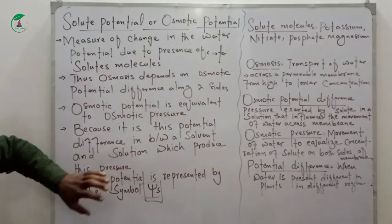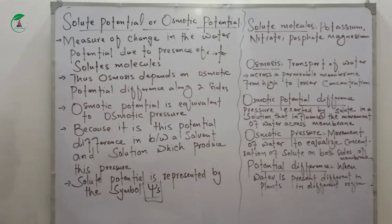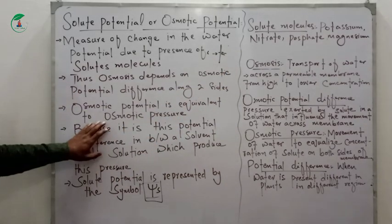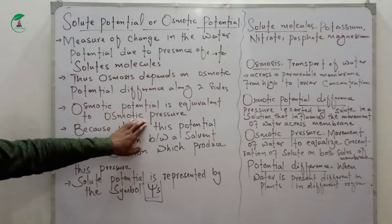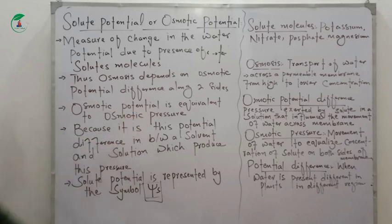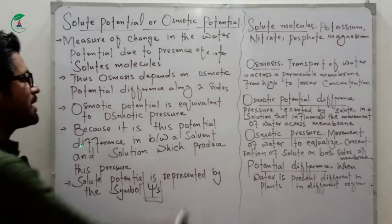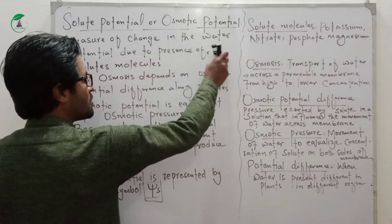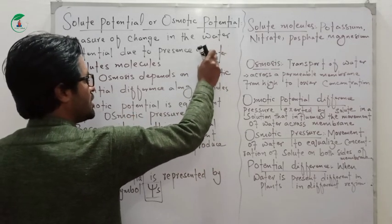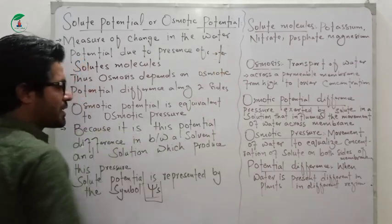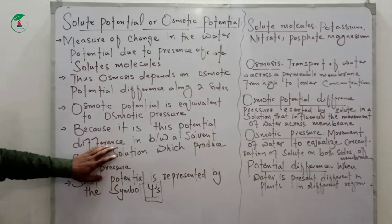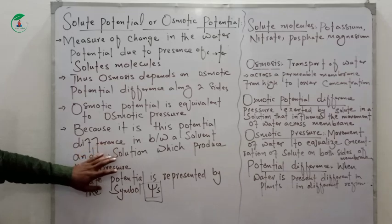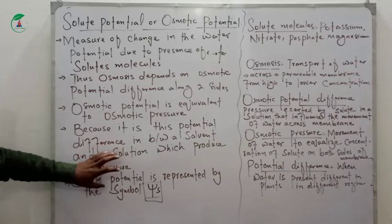The osmotic potential is equivalent to osmotic pressure. The membrane is formed with two elements — solute and solvent. The solution functions through the interaction of solute and solid, with the potential difference present in the fluid pressure.